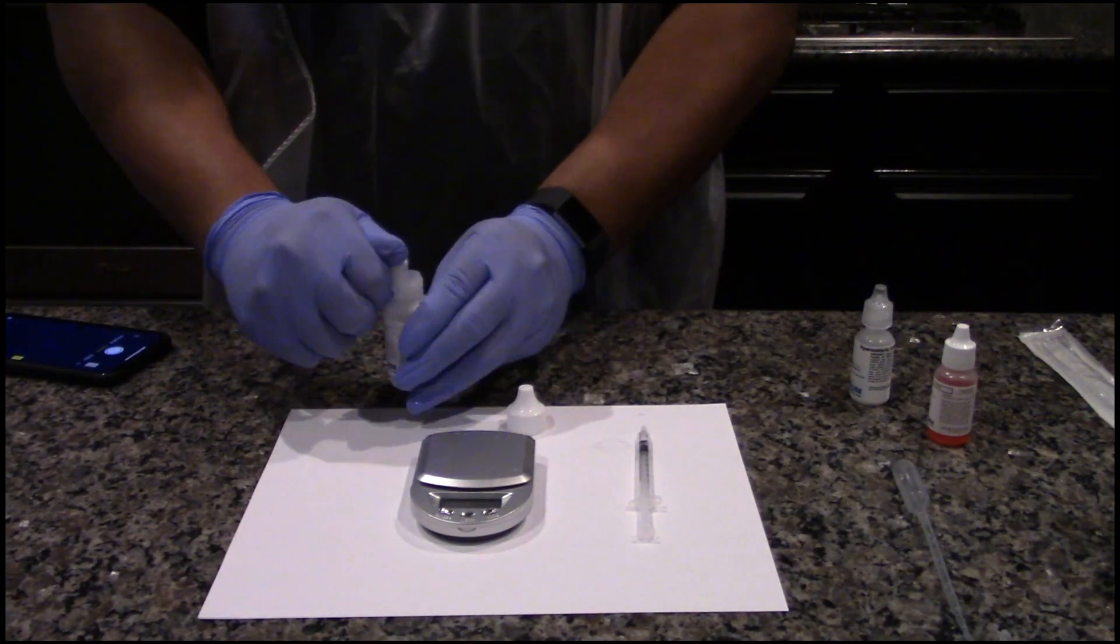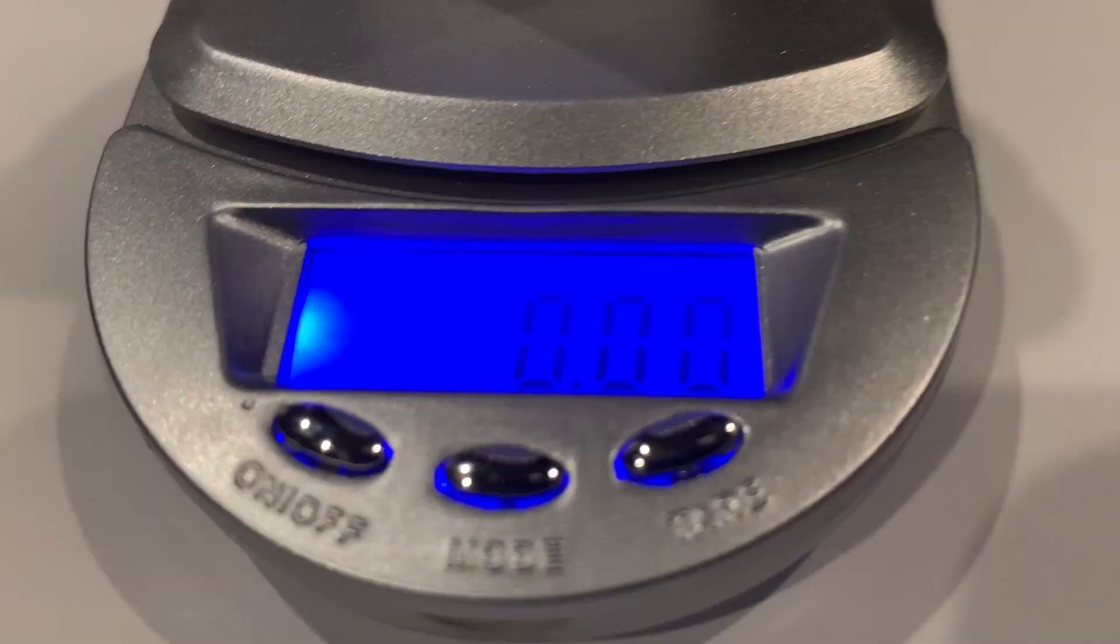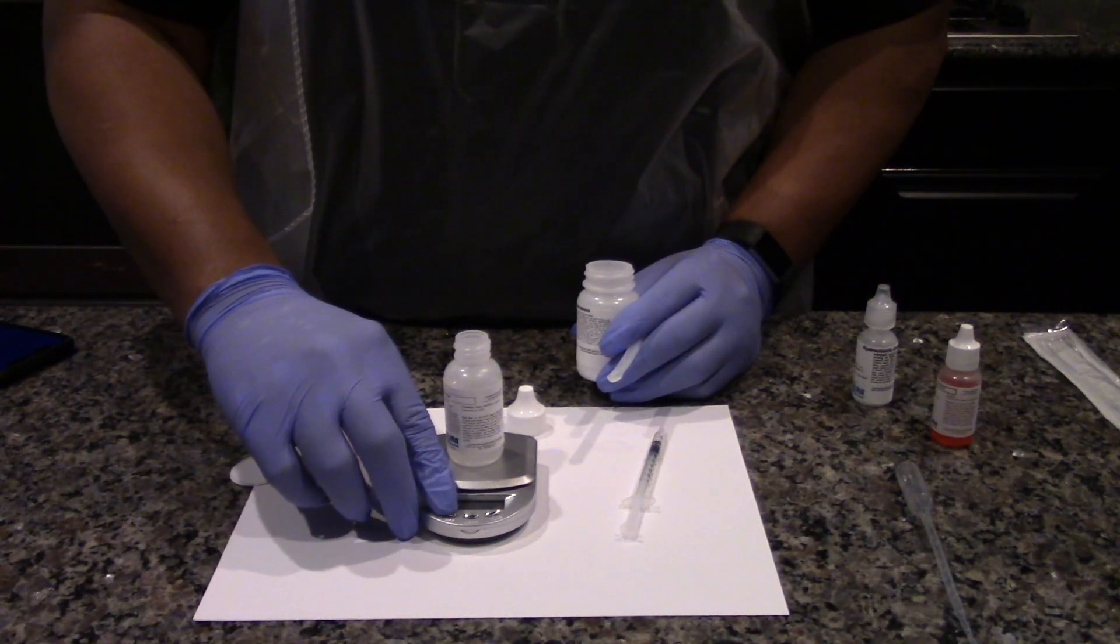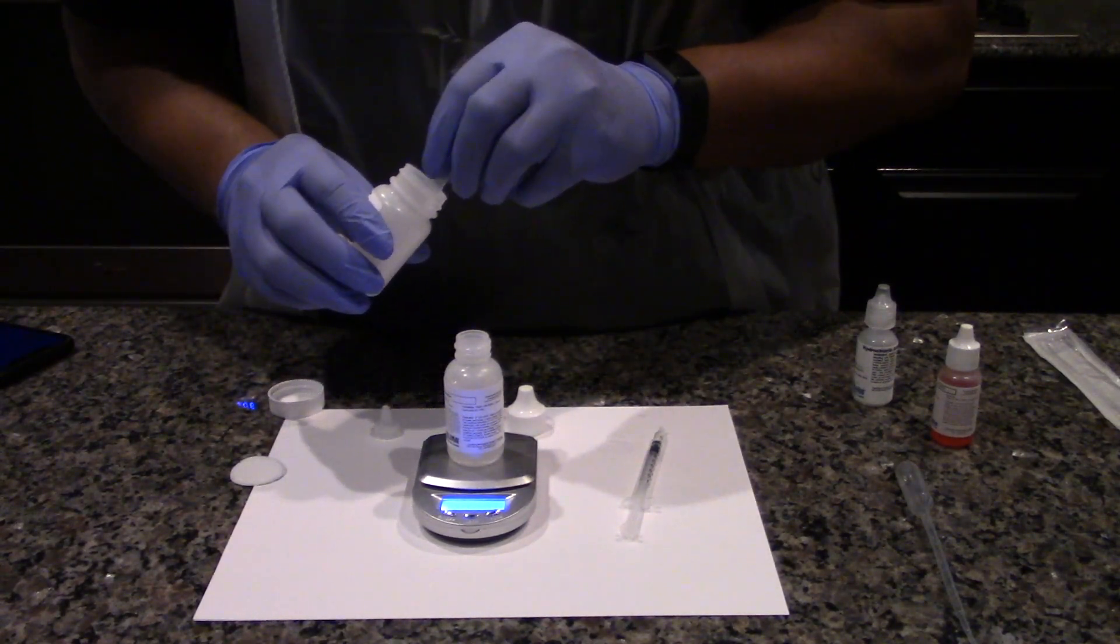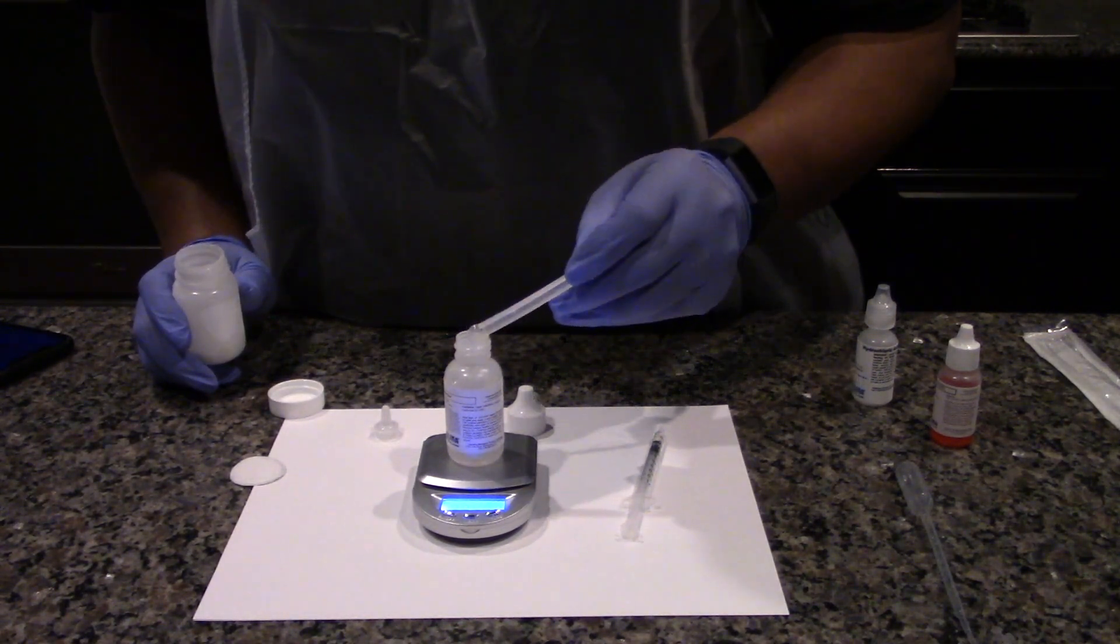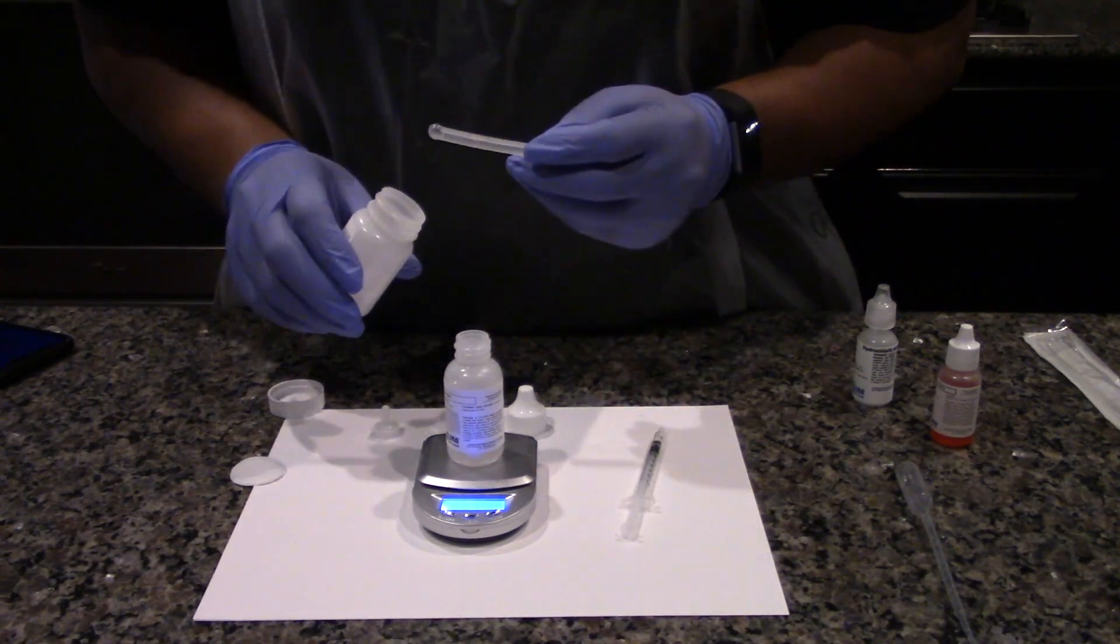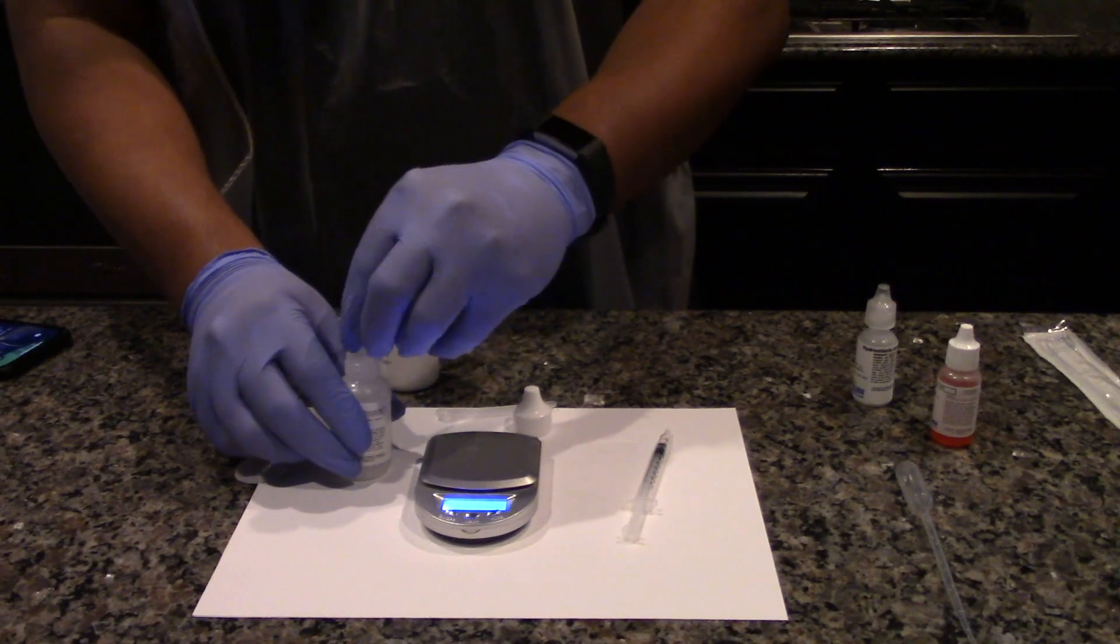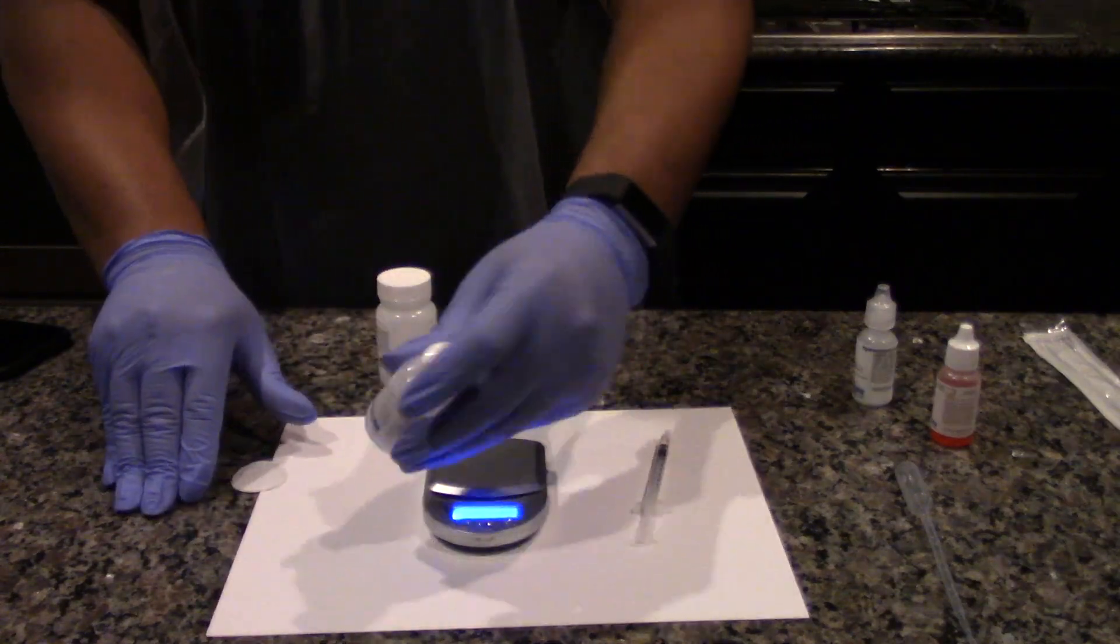Carefully remove the tip of the lime water bottle. Place the bottle on the balance and tare the balance. You want to add 0.02 to 0.04 grams of calcium chloride to the bottle. Be very careful when measuring the calcium chloride because you don't want to overshoot the amount that you need. Reinsert the dropper tip and recap the bottle. Shake thoroughly.